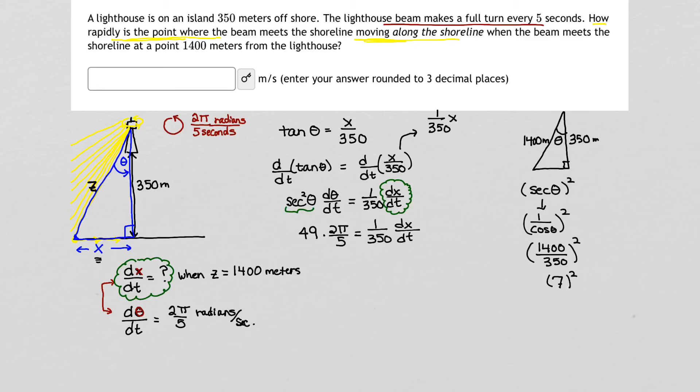I'm almost finished. That last step is all about algebra. So to solve for dx/dt, we want to put everything together on the left side, which is going to be 49 times 2, or 98π over 5. And that's our left side. On the right side, I have 1 over 350 dx/dt. My final step to solve for dx/dt is to multiply both sides of my equation by the reciprocal. So I'm going to multiply by 350 on the right and 350 on the left. And when I do that on the left, that gives me 350 times 98π over 5 equals just dx/dt.